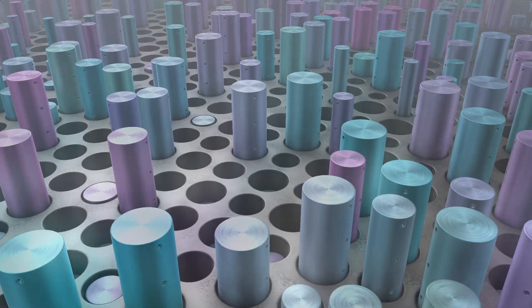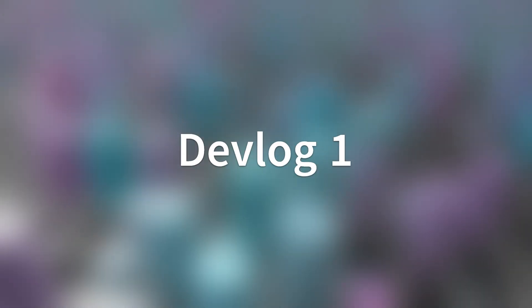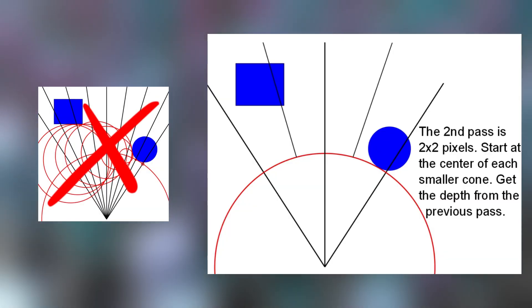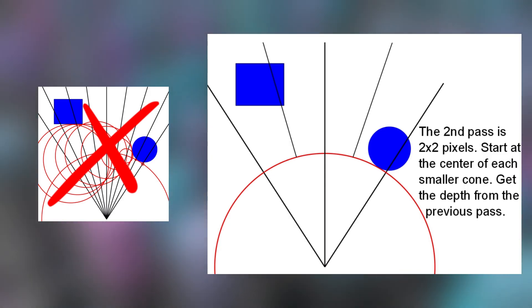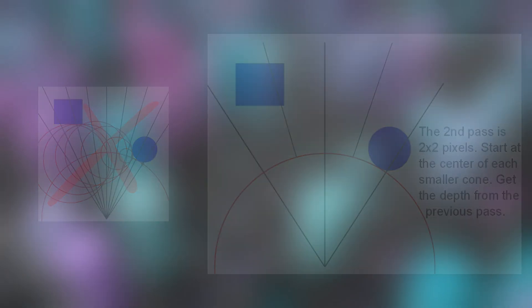This is where the big brother of ray marching comes along: cone marching. There aren't a lot of resources for cone marching — only mentioned in a PDF and a few articles online. But the general idea is that instead of marching one pixel at a time, you could march multiple pixels, which mathematically is represented as a cone, and then march per pixel once you've reached a good point. This can be done on multiple passes on the GPU that eventually result in more efficient rendering time.